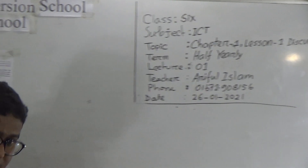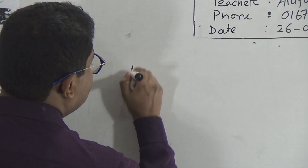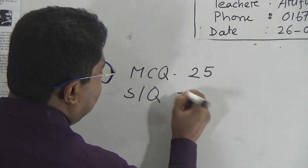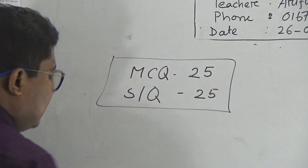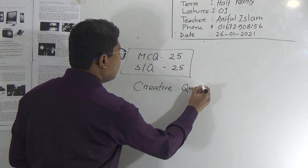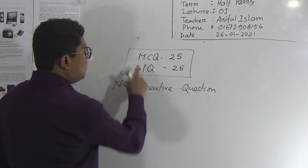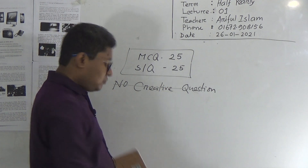So my students, I hope you have got this book — Information and Communication Technology, Class 6. Before going to the class, I want to discuss one thing. In your exam, you will have MCQ — 25 marks — and short question answers. You will have to answer 5 short questions, also 25 marks. Very good news: in ICT, we will have no creative questions. MCQ 25, and short question answer 5, you will have to answer for 20 marks. This is our marks distribution.